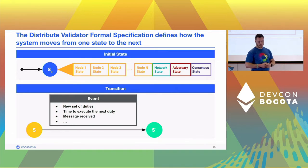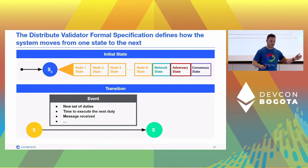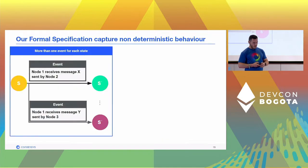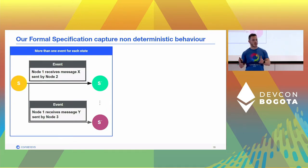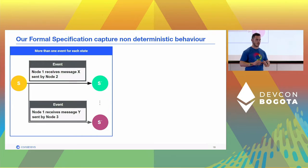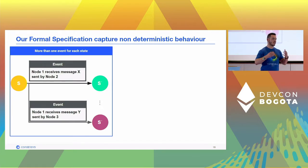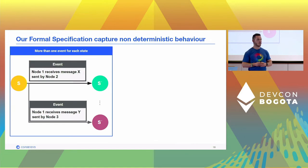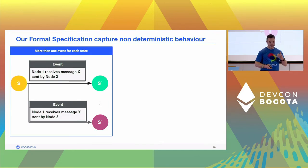On a given event — which can be a new set of duties, time to execute the next duty, or a message received — you move from one state to the next, like from the yellow state to the green state. One very important characteristic of how this specification is written — common also to TLA+ — is that we allow non-deterministic behavior. From one state you might have more than one event that can move you to two different states. For example, a node might receive a message from node two or from node three, which allows capturing network asynchrony.